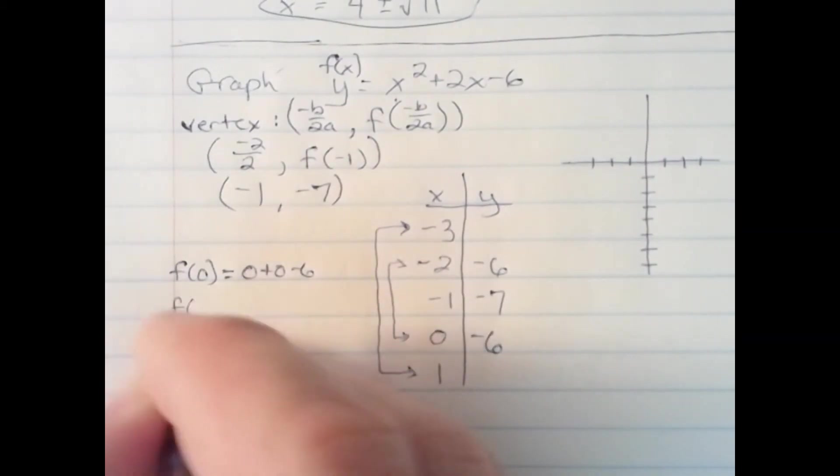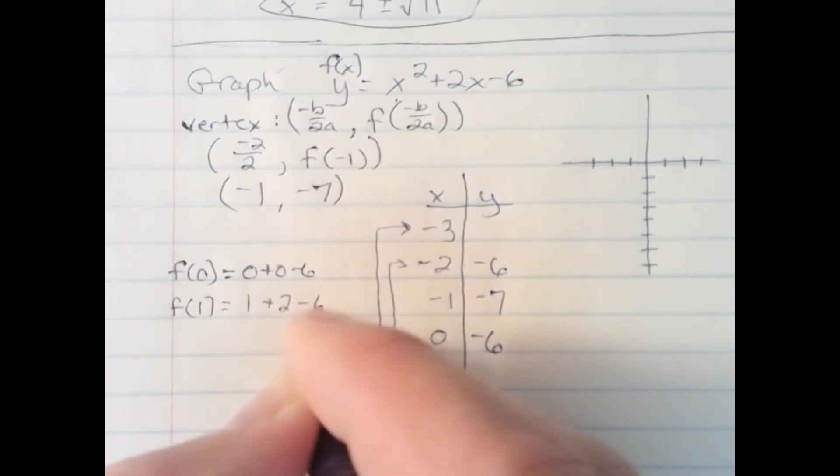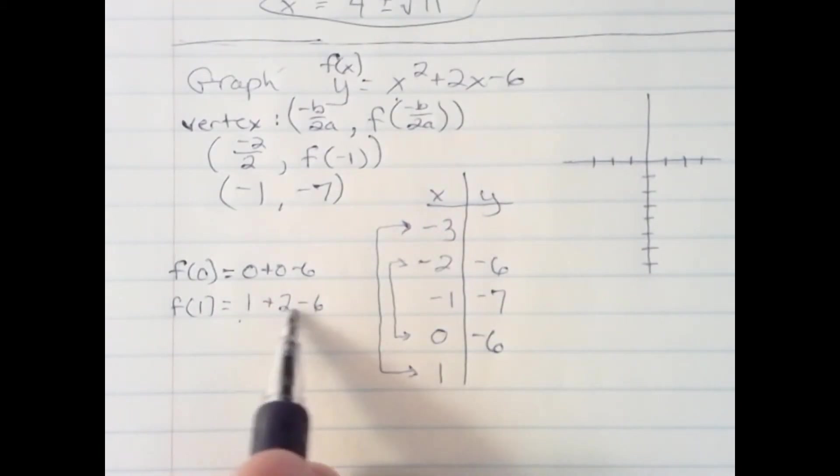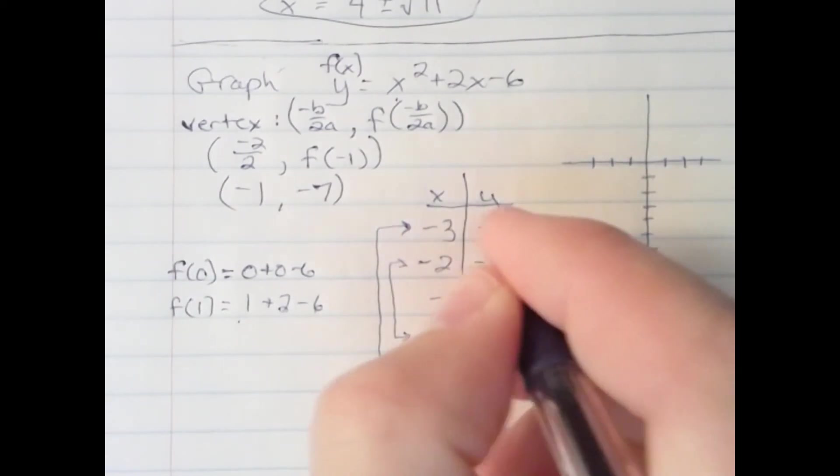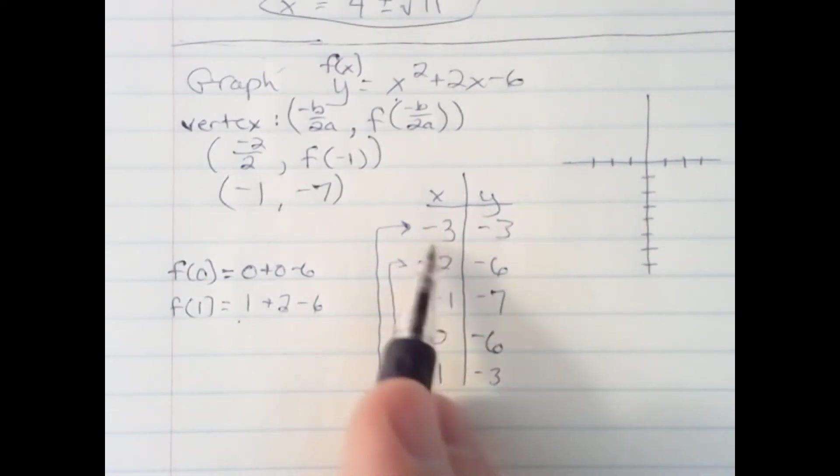Let's do it for f of 1. This would be 1 plus 2 minus 6. 1 plus 2 is 3. 3 minus 6 is negative 3. Because of symmetry, I know up here, this y-value would also be negative 3.